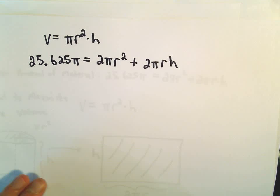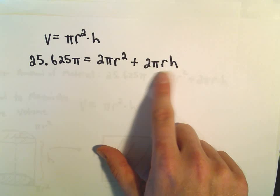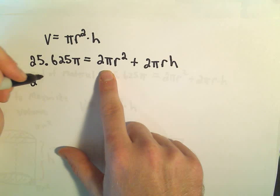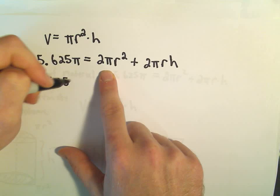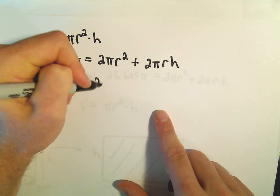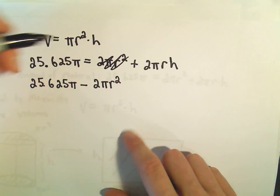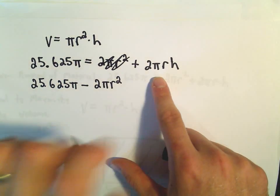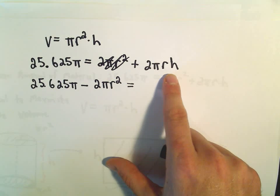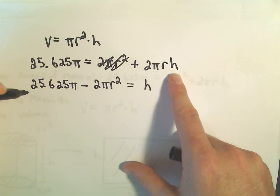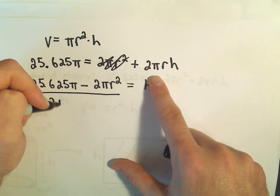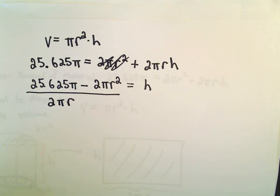Alrighty, so now we're getting a little closer. I think I'm going to take this equation and just solve for H. So 25.625π, we could subtract the 2πR², and then so that term would now be moved over. And then we would just have all of this equal to 2πRH. Well, we can divide both sides by the 2πR, and now we've got an expression for H.